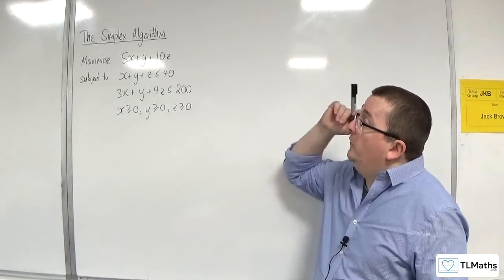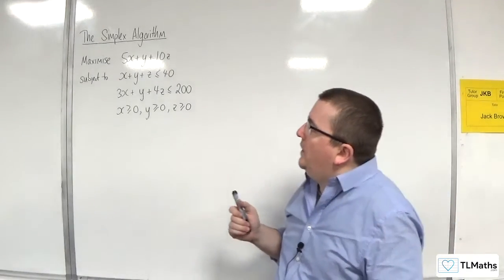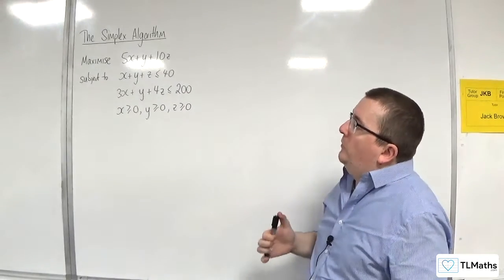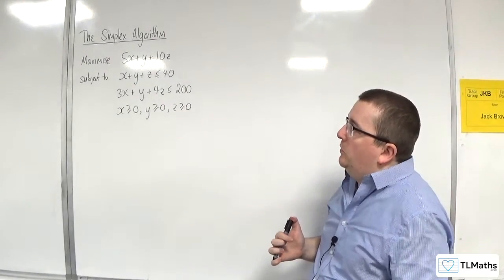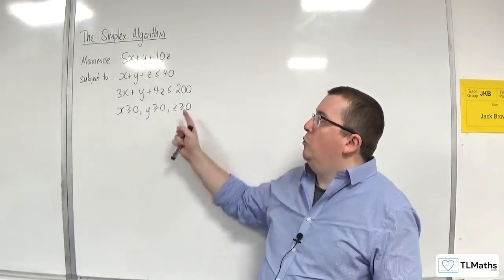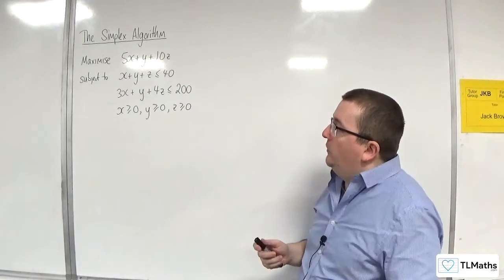So we want to maximise 5x plus y plus 10z, subject to x plus y plus z is less than or equal to 40, 3x plus y plus 4z is less than or equal to 200, and we've got the non-negativity constraints x greater than or equal to 0, y greater than or equal to 0, and z is greater than or equal to 0.